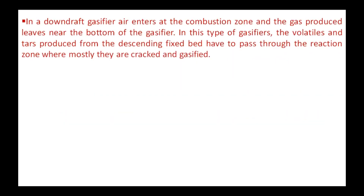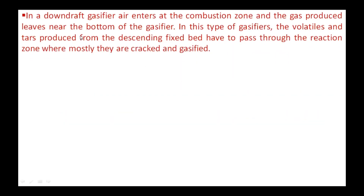In a downdraft gasifier, air enters at the combustion zone and the producer gas leaves near the bottom of the gasifier. In this type of gasifier, the volatiles and tars produced from the descending fixed bed have to pass through the reaction zone, which is a constriction at the highest temperature, where they are mostly cracked and gasified to form gas.